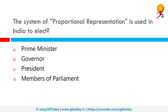The system of proportional representation is used in India to elect whom? Proportional representation is a way of having members in governing bodies other than direct election. Our upper house, the Rajya Sabha, is based on the proportional representation system — based on their strength in a state assembly, political parties can nominate their members to the upper house. The same system is followed for electing members of the legislative council from state assemblies. The President also comes under this umbrella, so the correct answer is President. The other options — Prime Minister, Governor, and Members of Parliament — are all elected differently.